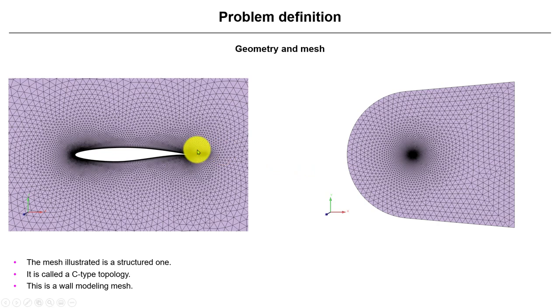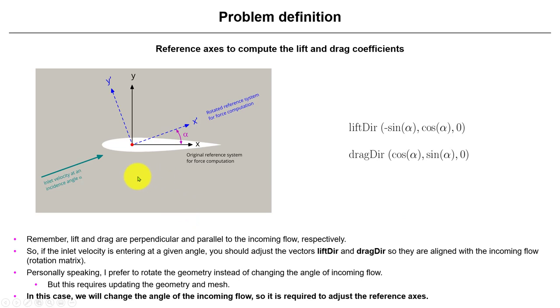And this is our measured structured mesh. So we have our inflation layer closer to the airfoil, triangular mesh with a nice transition. The case is a wall modeling. By the way, later we're going to see a little bit more about that.